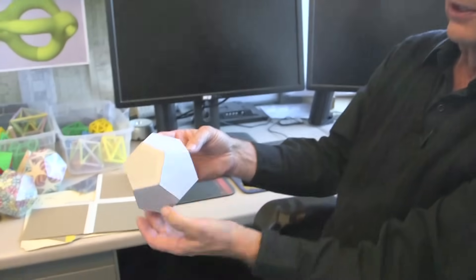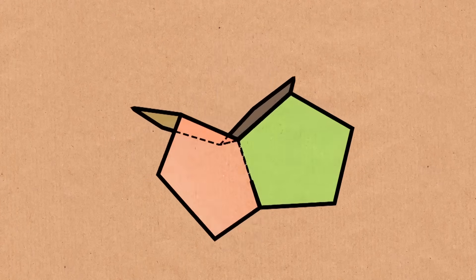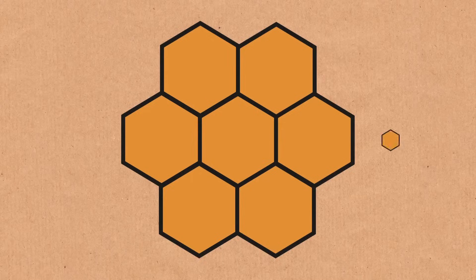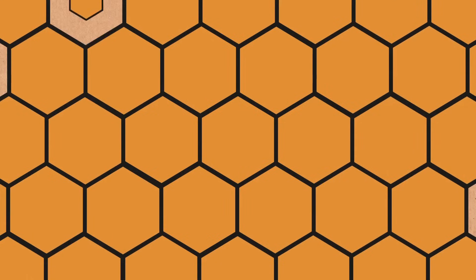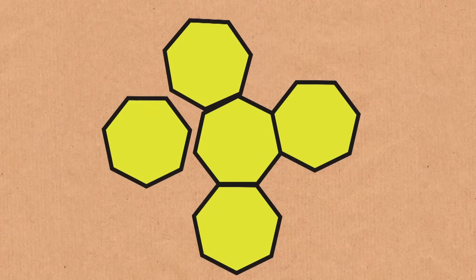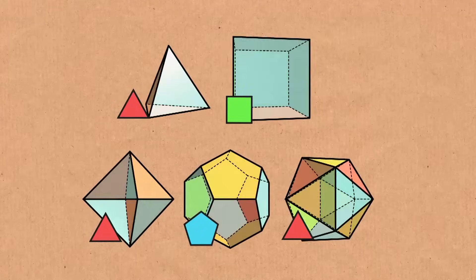Trying to put four pentagons around a corner exceeds a total of 360 degrees — you get something warped like a potato chip, and it's no good. We're done with pentagons. Three hexagons make a very flat tiling — that's no good. Heptagons don't even really fit into a plane. From there on up we're done — nothing new can happen. And now you know exactly why there are five platonic solids and exactly five platonic solids.